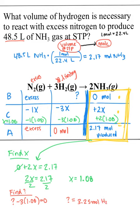Last step, they want to know what volume. So we know that at STP, 1 mole is 22.4 liters. So let's multiply 3.25 times 22.4 and I get 72.75 liters of hydrogen is what we need.